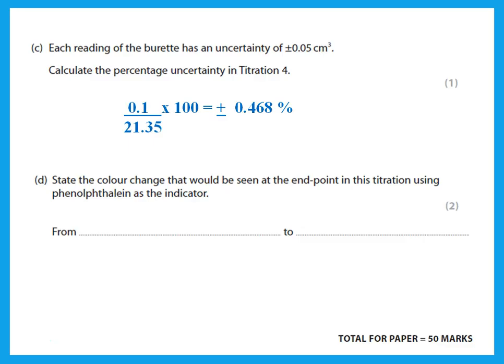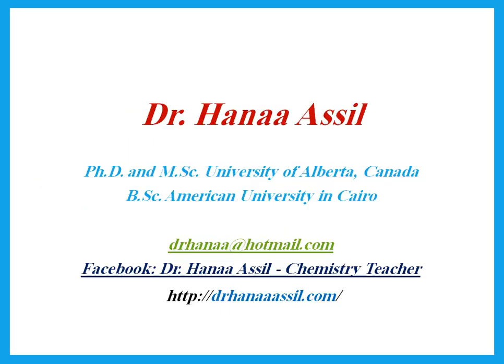State the color change that would be seen at the end point in this titration using phenolphthalein. What did he have in the flask? He had a base, and phenolphthalein with sodium hydroxide is originally pink, and then when we do the titration, it becomes colorless. I hope this was helpful and thank you for listening.